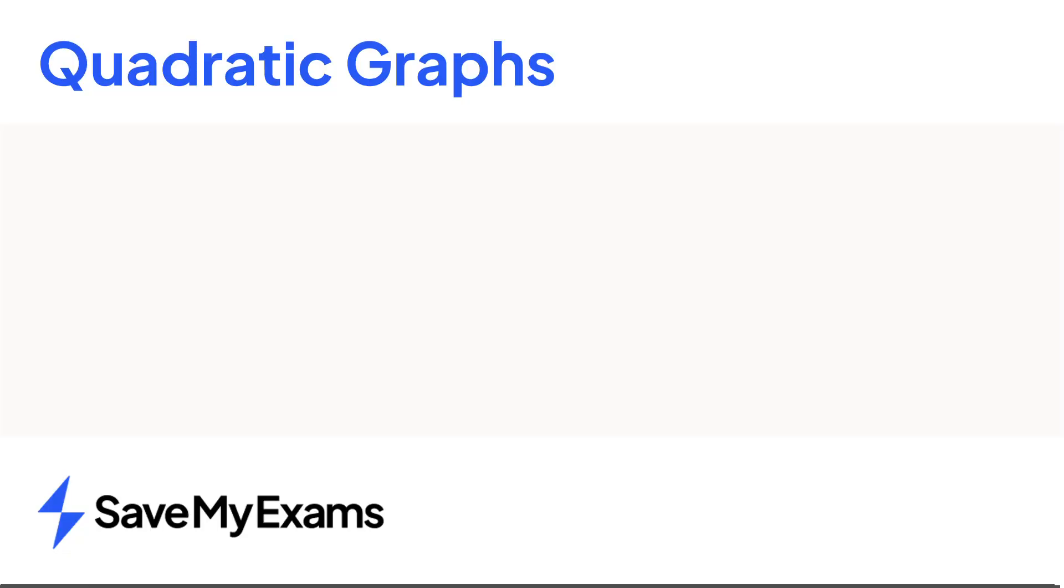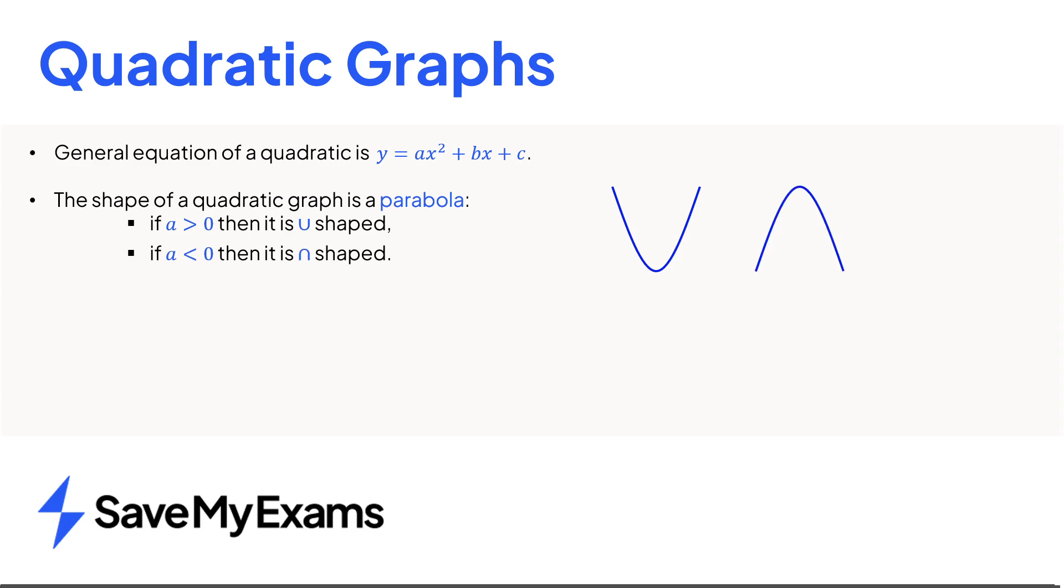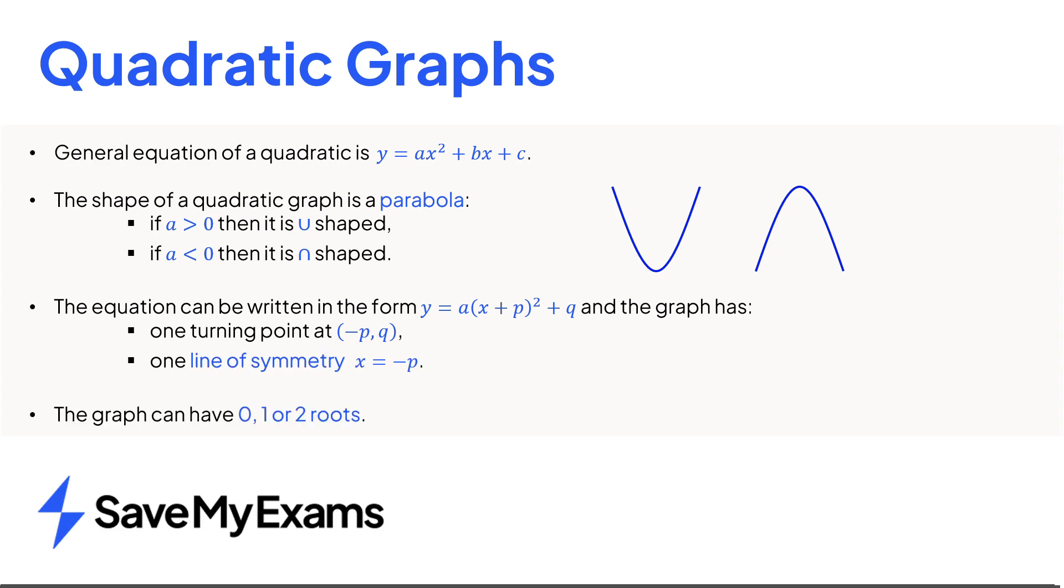In summary, you need to know how to write the general equation of a quadratic. The shape of a quadratic graph is a parabola, which means if a is positive, it's u-shaped, and if a is negative, then it looks like an upside-down u. We can rewrite the equation of a quadratic by completing the square, and by doing that, it helps us find the coordinates of the one turning point, and the equation of the line of symmetry. Quadratic graphs can have 0, 1, or 2 roots. These are just the points where the graph crosses the x-axis.